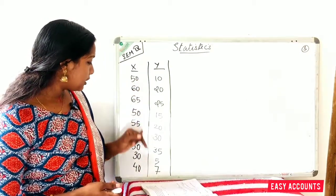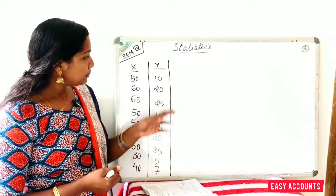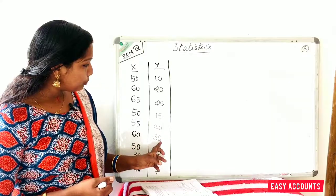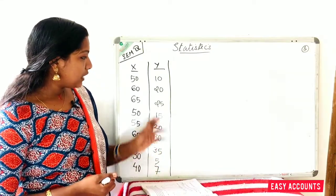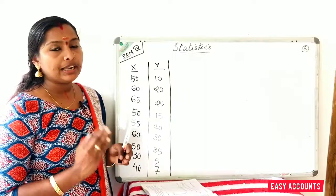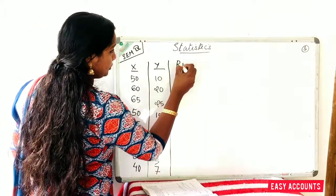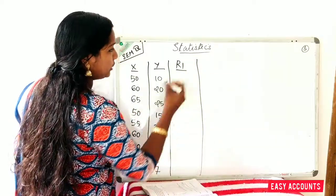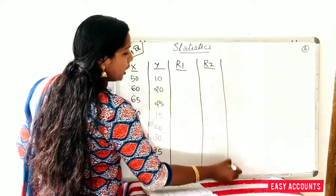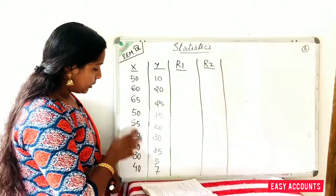And y equals 10, 20, 25, 25, 25. Then we assign the rank. X can be assigned rank R1, and y is assigned rank R2.